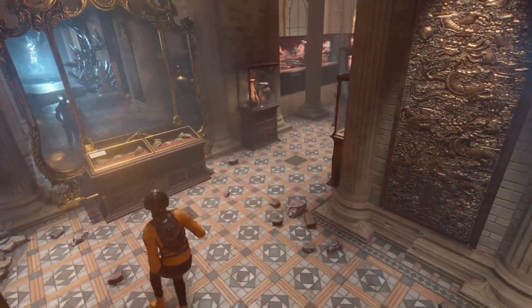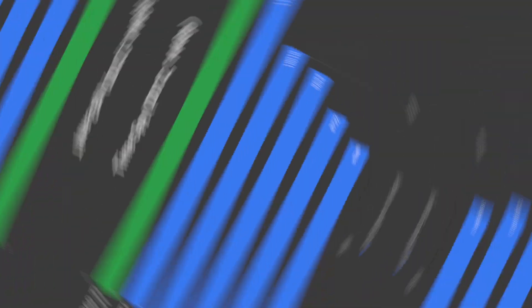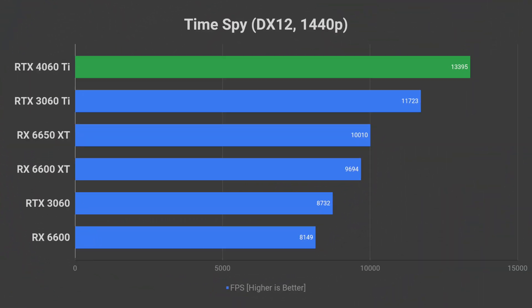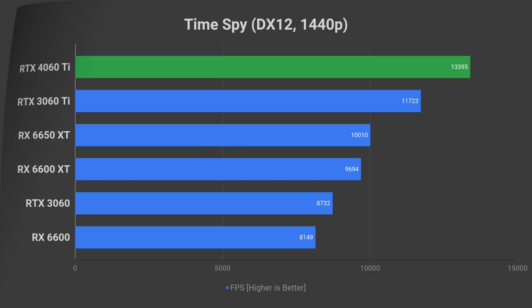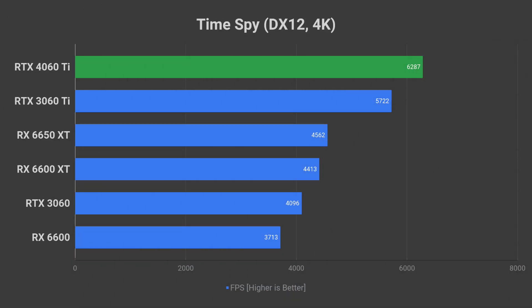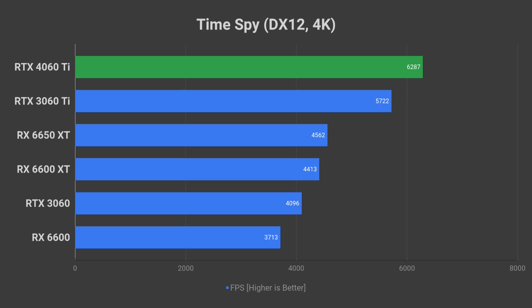Timespy is a DirectX 12 benchmark without ray tracing. At 1440p resolution, the 4060 Ti performs 14% better than the 3060 Ti. When we move on to 4K resolution, the performance increase dips slightly, showing just 10% improvement over the previous generation.